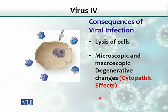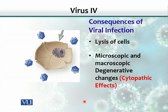When a virus infects a cell, it causes some changes. Some of those changes are microscopic in nature, and some are macroscopic — meaning they could be seen with the naked eye. If you look at tissue that has been infected with a virus during a postmortem examination, some changes would be visible to the naked eye, while others can only be appreciated under a microscope.